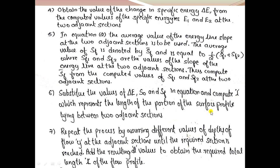We repeat the process by assuming different values of depth of flow at the adjacent section until the required section is reached, then add all the resulting ΔL values to obtain the required total length of the flow profile — that is, the length of the gradually varied flow section or backwater curve.